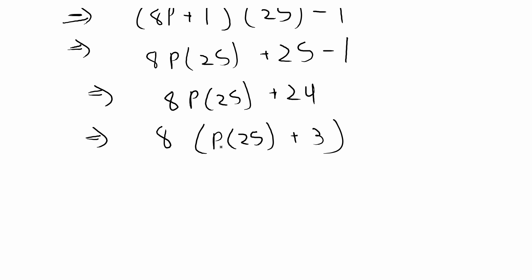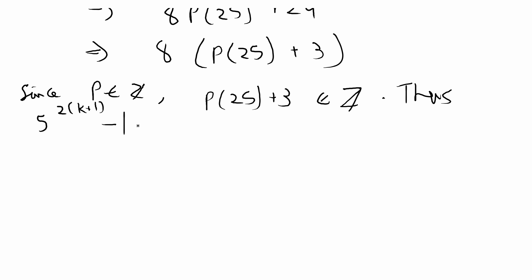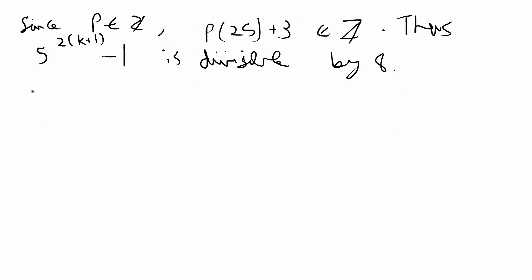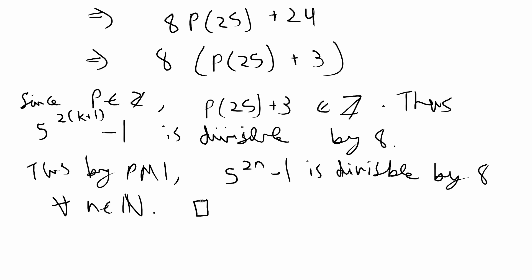Since p is an integer, p times 25 plus 3 is also an integer. Thus 5 to the 2 times (k plus 1) minus 1 is divisible by 8. Lastly, by the principle of mathematical induction — PMI — 5 to the 2n minus 1 is divisible by 8 for any n in the naturals, and we are done with this proof.